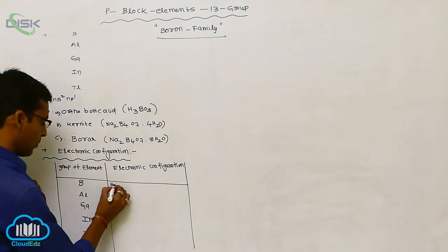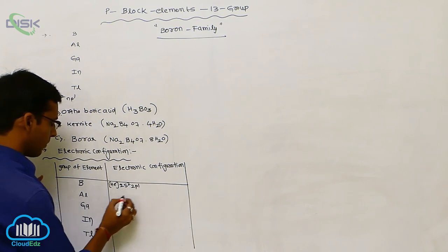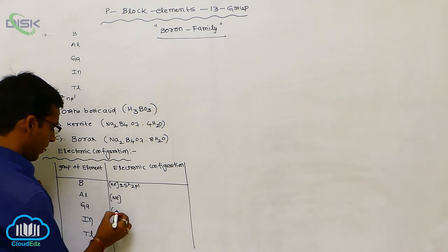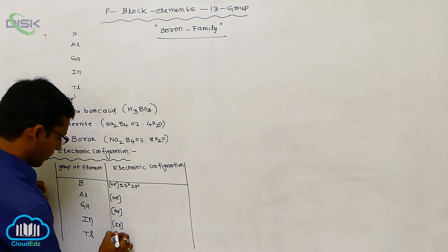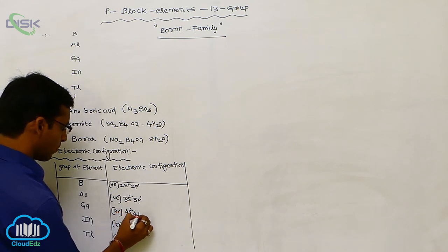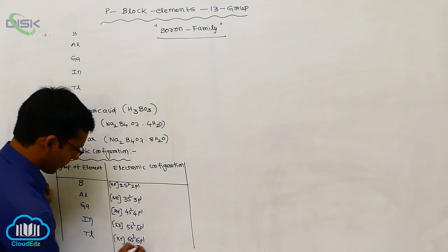The outermost containing here 2S2, 2P1. Next one neon, next argon, krypton, xenon. This is 3S2 3P1, 4S2 4P1, 5S2 5P1, 6S2 6P1.